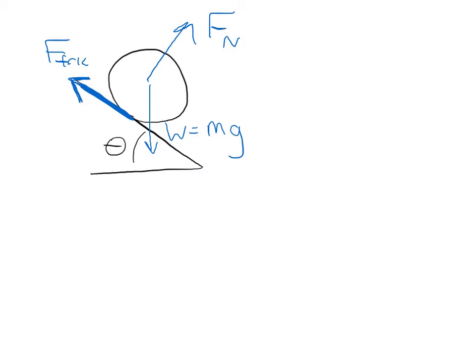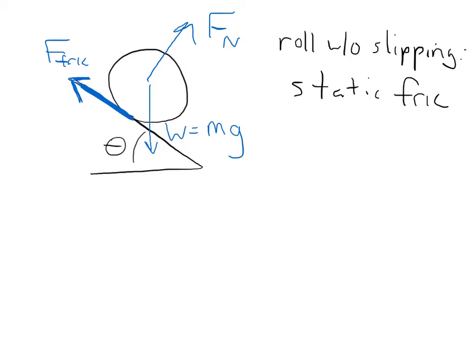Because this is rolling, we're going to assume it's rolling without slipping. If it's rolling without slipping, we have to deal with static friction — mu sub s. The fact that it rolls without slipping also means that a is equal to alpha times r; in other words, the linear acceleration equals r times the angular acceleration.